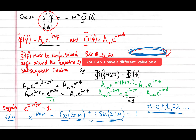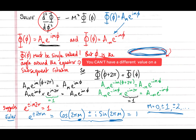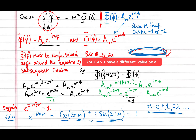The final solution we write is phi(φ) = A_m · e^(imφ). We only need this one solution — the second solution (with -m) is already covered because m itself can take negative values such as -1, -2, etc. So the minus-m solution is redundant and we can discard it.